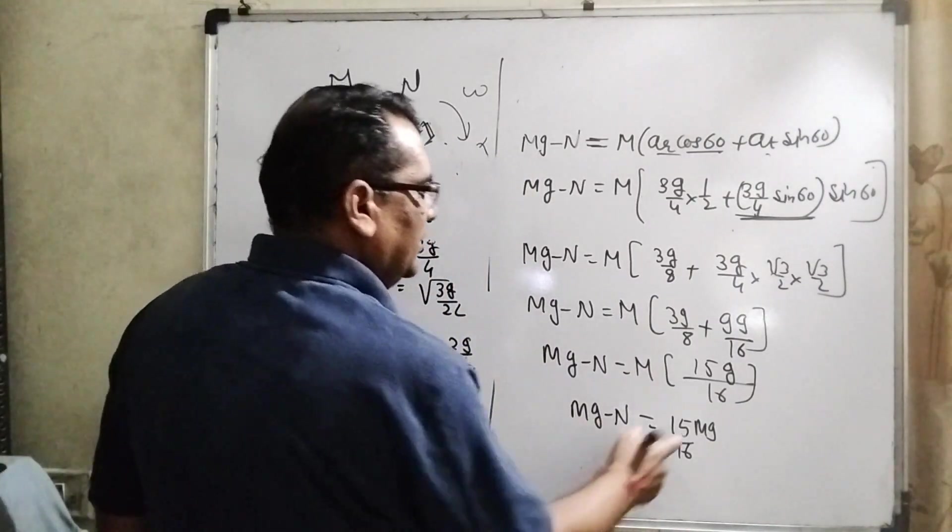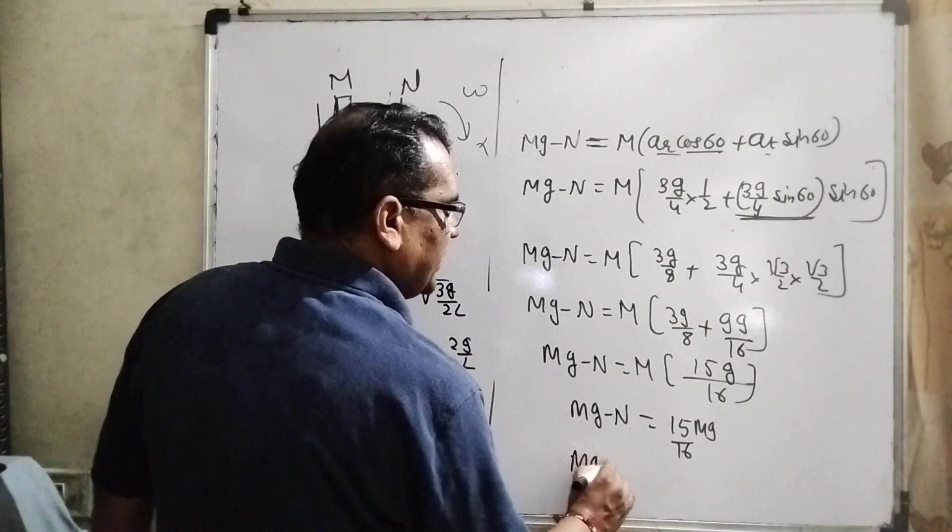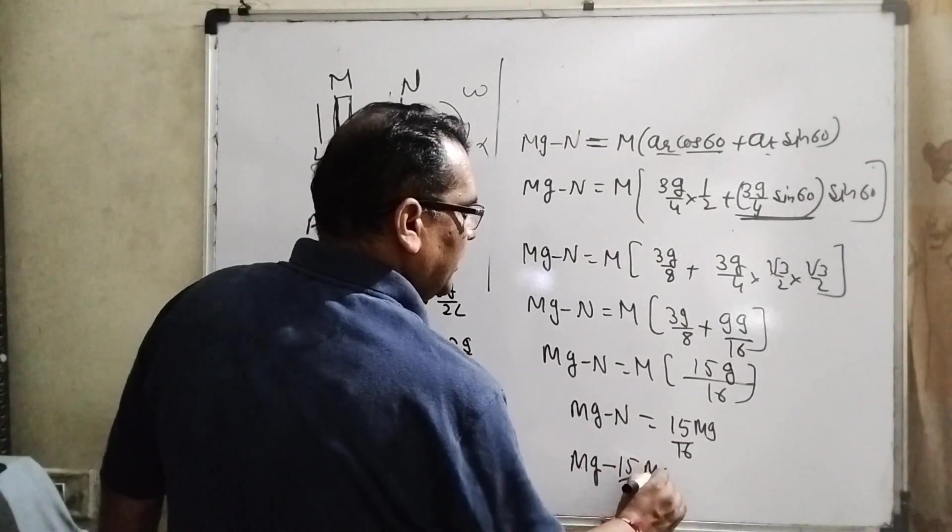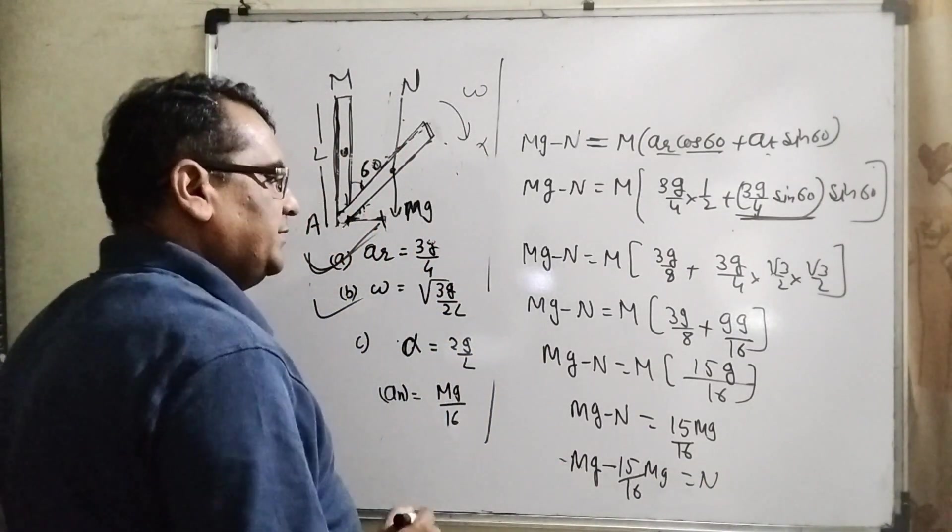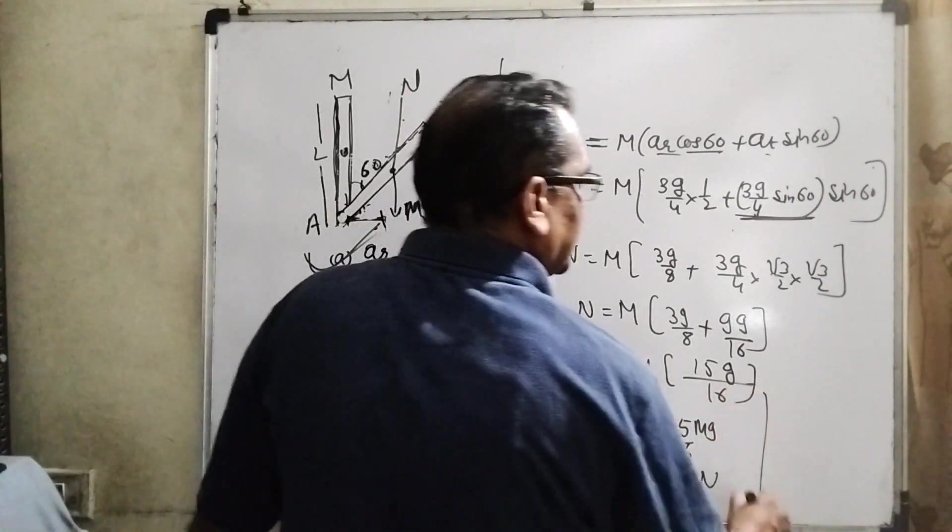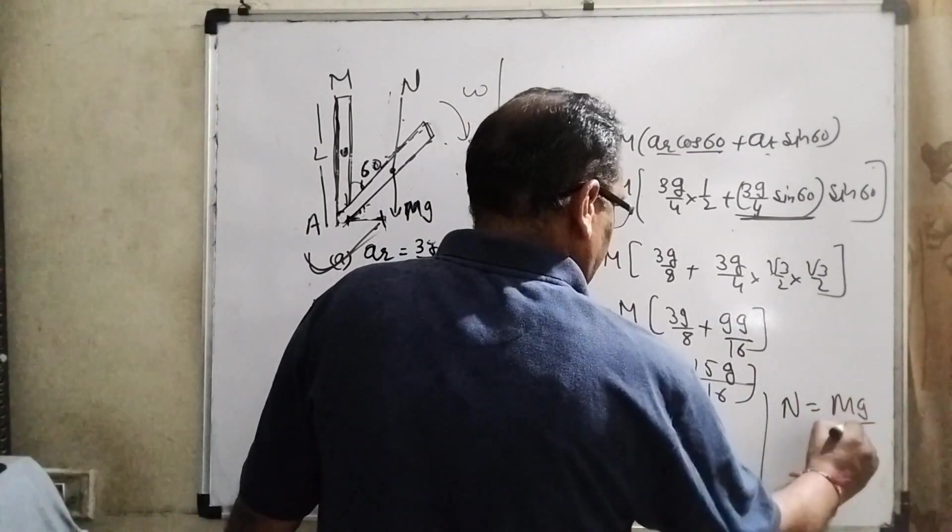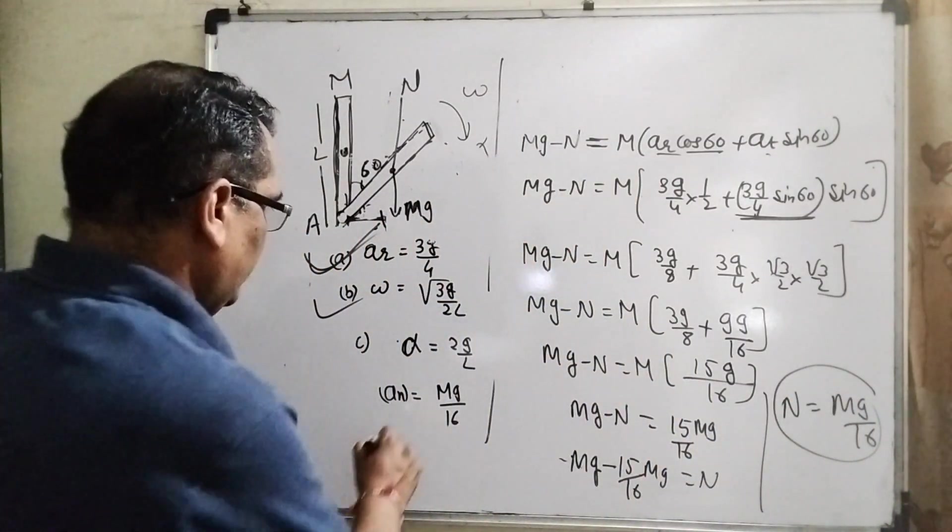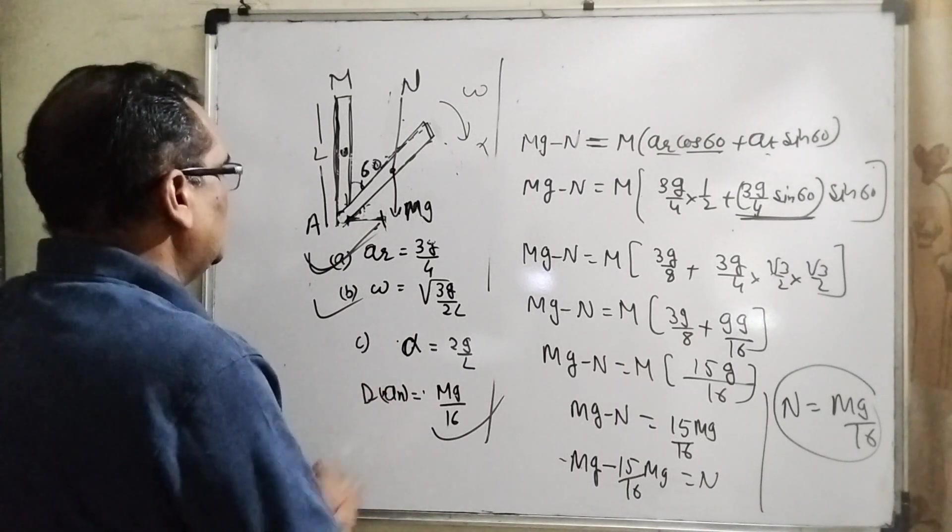M g minus N, and we have to find out, then the whole values transposing to the left side, minus 15 by 16 M g equal to N. Then 16 M g minus 15 M g, then normal force can be M g by 16. So we can check, normal force is M g by 16. So last option, D option is also correct.